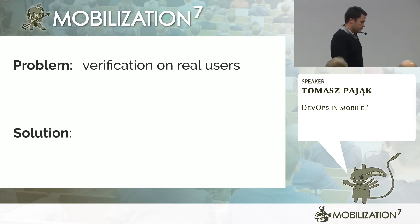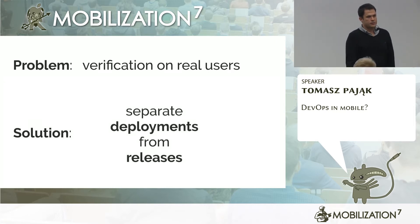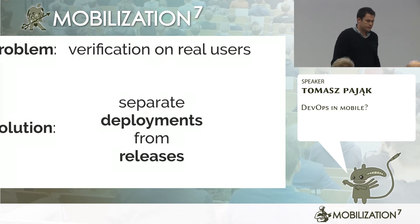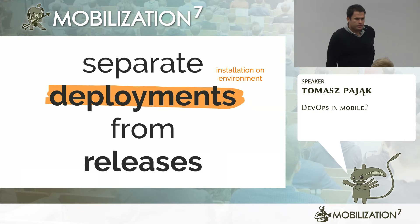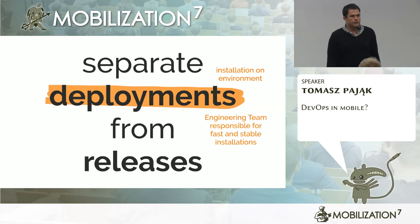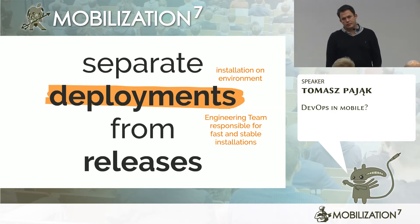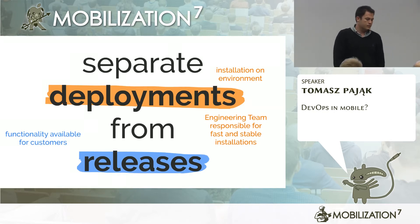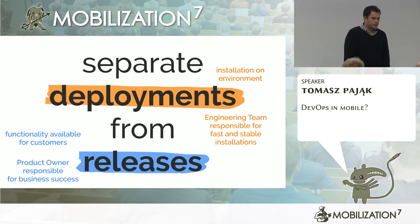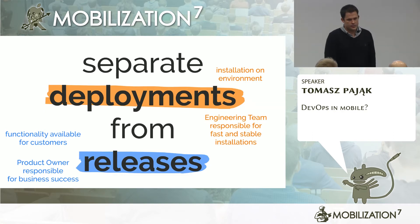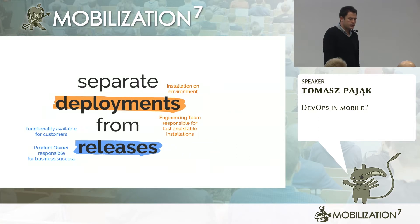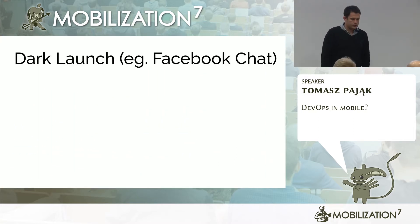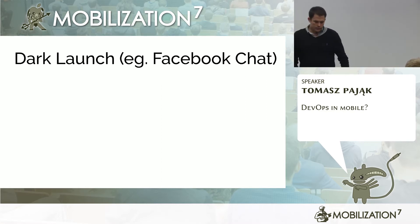The problem is that when you need to verify on real users — maybe instead of making extensive tests — maybe you should separate deployments from releases. Some people don't understand what's a deployment and what's a release. Deployment is an installation on an environment. The engineering team is responsible for fast and reliable installations on the production environment, but it doesn't necessarily mean the functionality is available for end customers. Releases are the functionality available for customers, and the product owner or project manager is responsible for the business success. That's the major difference, and there are several ways to achieve that.